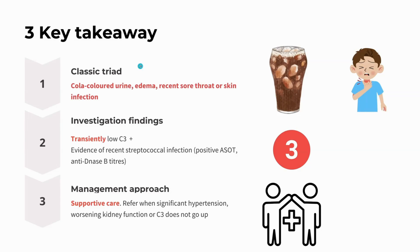First, post-streptococcal glomerulonephritis has the classic triad. First, they have cola-colored urine like Coca-Cola. Secondly, they can have edema. And most importantly, they need to have a recent sore throat or skin infection. That's why they are called post-streptococcal — because streptococcus can lead to sore throat or pharyngitis, or skin infection, which we call impetigo.